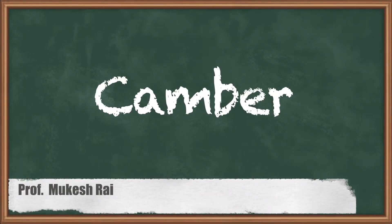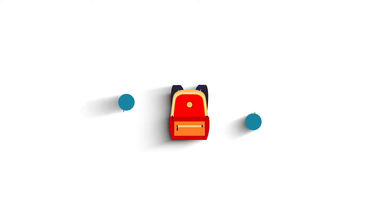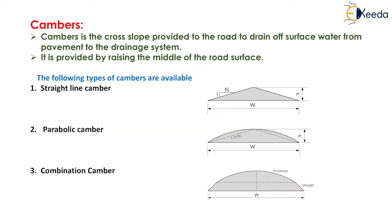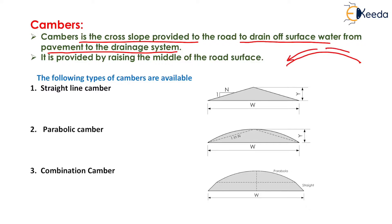Today we are going to study camber. Camber is the cross slope provided to the road to drain off surface water from the pavement to the drainage system. The cross-section of the road is shaped like a parabola to drain off the water coming over the surface of the pavement. The top surface of the pavement is made just like a parabola or a straight triangle shape.